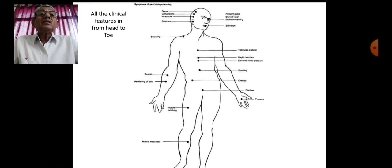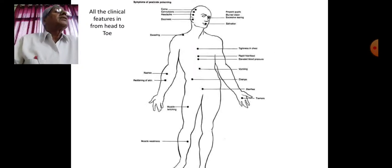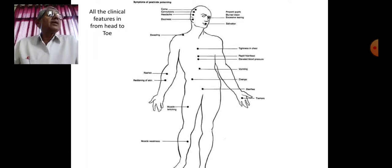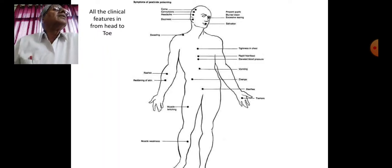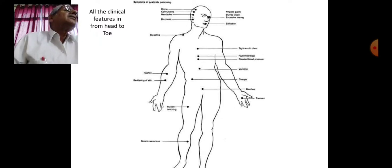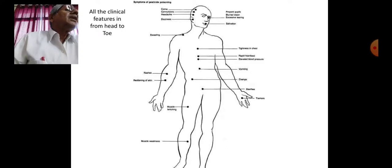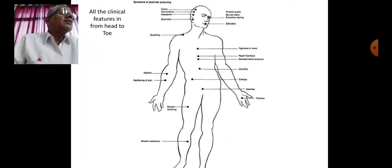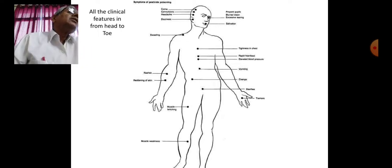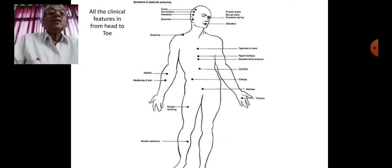In this picture you can see the various effects which occur from head to toe. The patient may go into coma due to CNS involvement, may have convulsions, headache, dizziness, increased salivation, excessive sweating on the skin, tightness in the chest, low blood pressure, abdominal cramps, diarrhea, tremors, muscle twitchings, muscle weakness, and rash or redness on the skin.